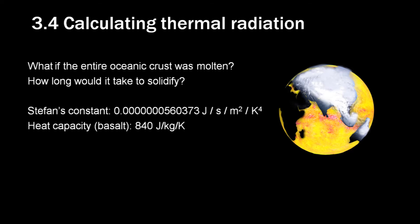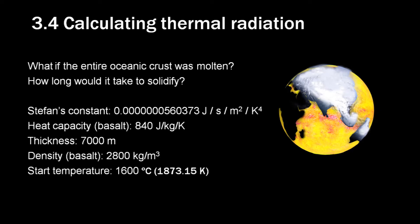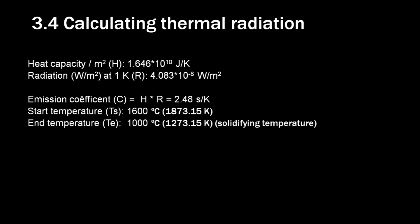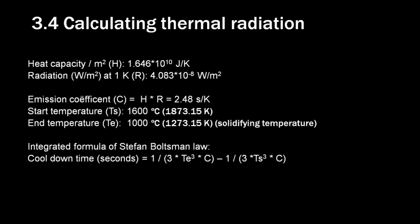And now we can calculate the thermal radiation for our scenario. What if the entire oceanic crust was molten at the same time? How long would it take to solidify? We use these variables. The thickness of the oceanic crust is about 7 km on average, and we use temperatures that are normal from molten lava, which is a starting temperature of 1600 degrees Celsius, and a solidification temperature of 1000 degrees Celsius. For this calculation, it is better to integrate the Stefan-Boltzmann law to get accurate results. Since the temperature is so high, the energy emission is huge. Remember, the temperature is in the fourth power. It takes one year and 150 days to solidify. So not billions of years, not millions of years, not even thousands of years. Only one and a half year.